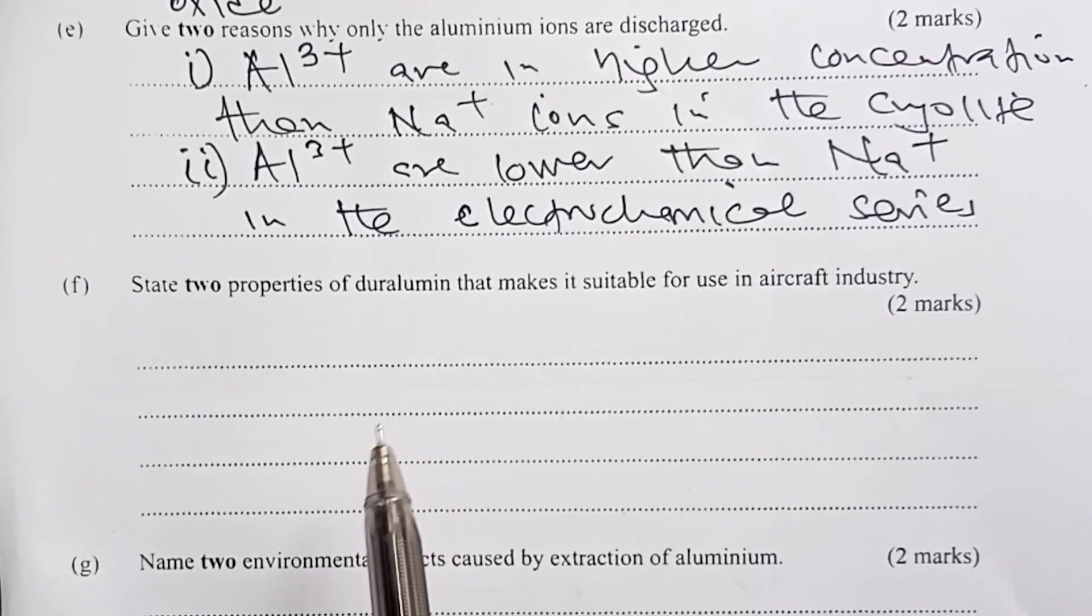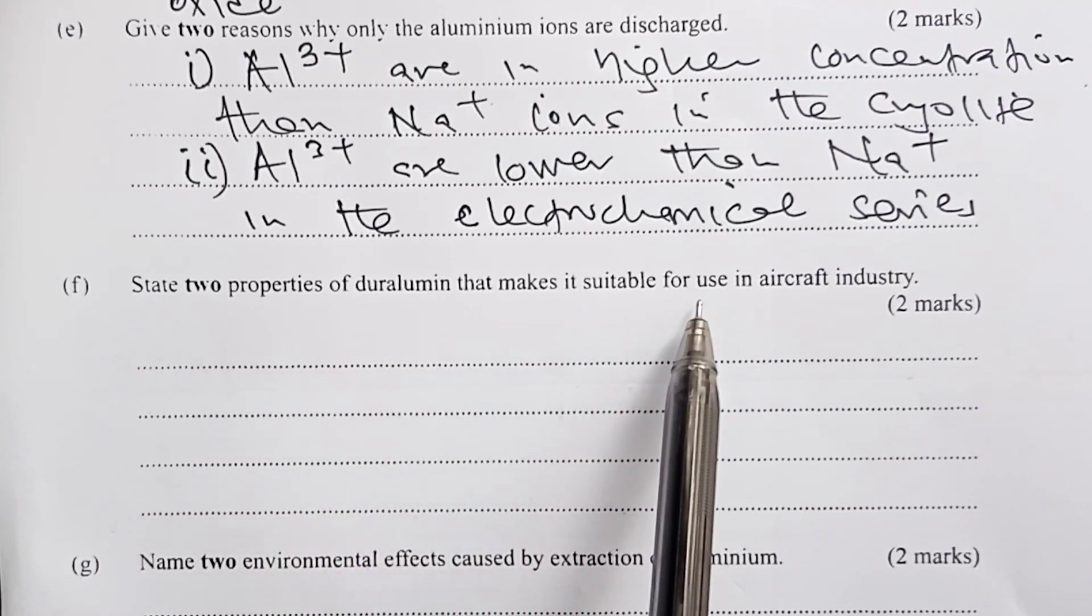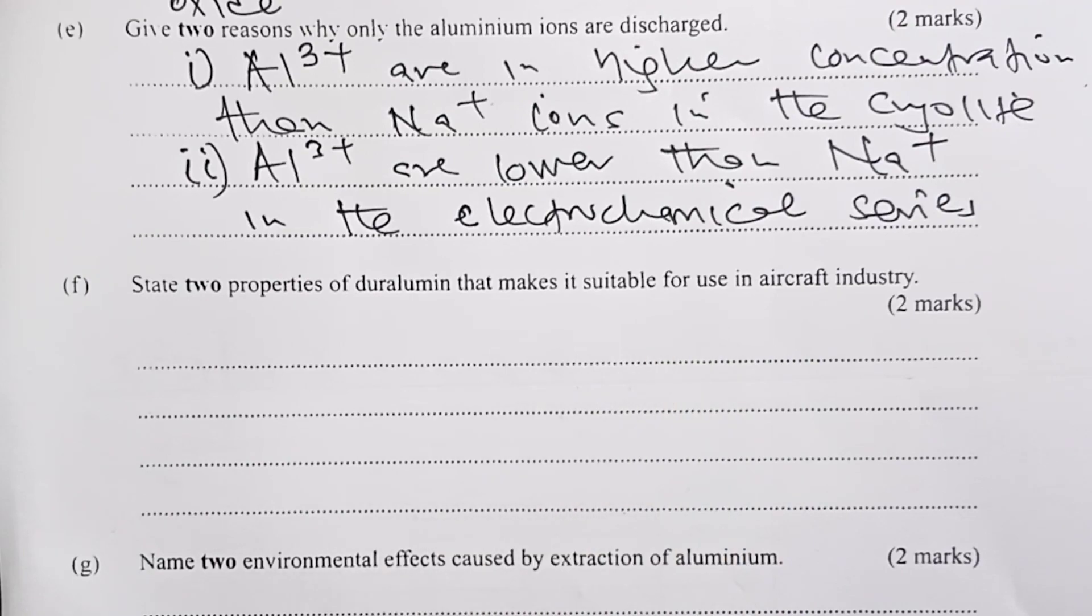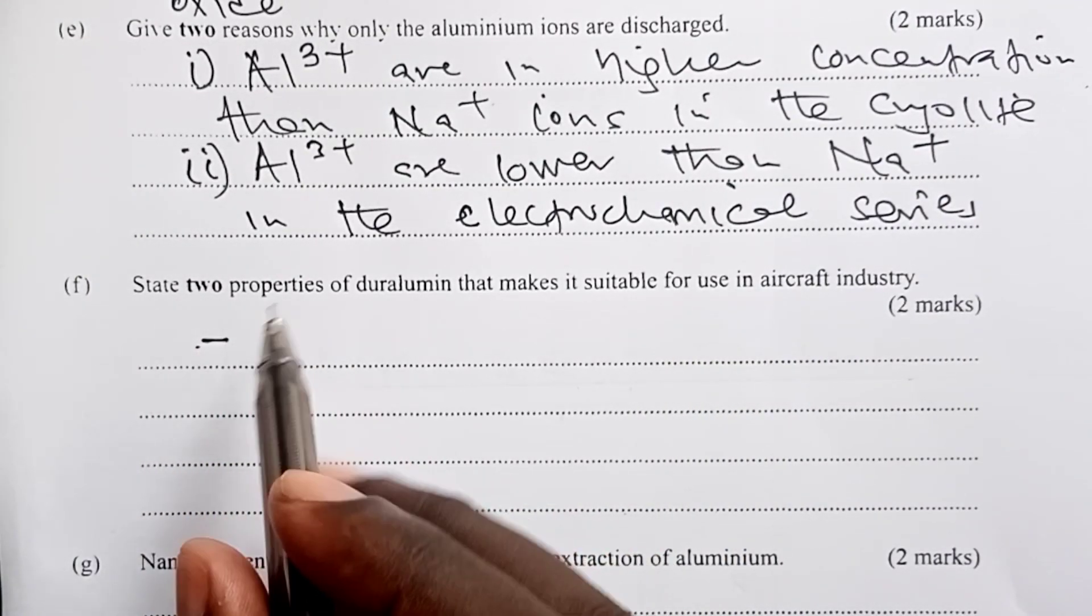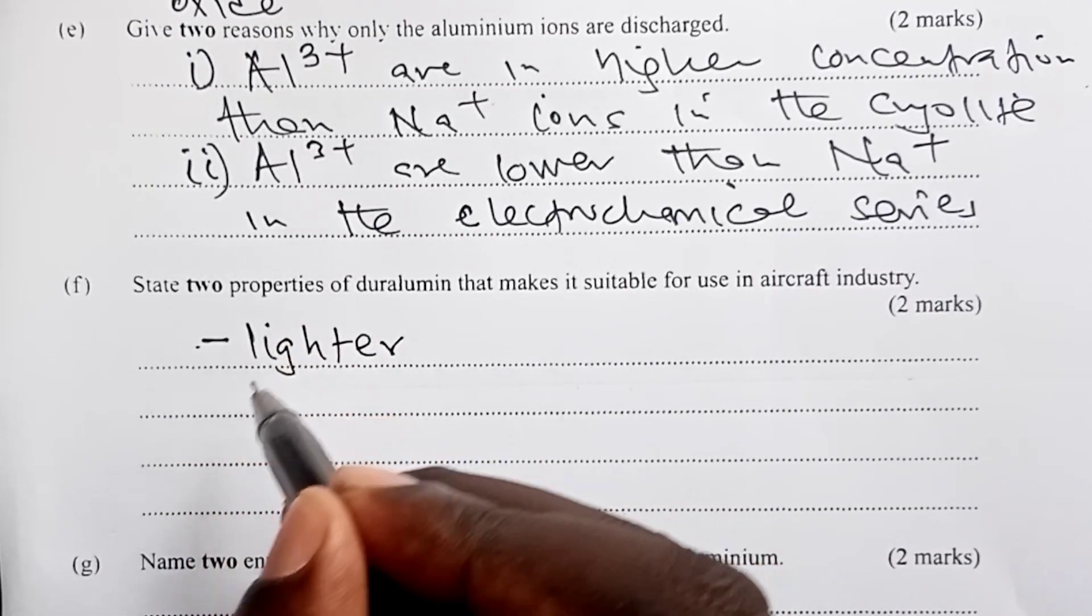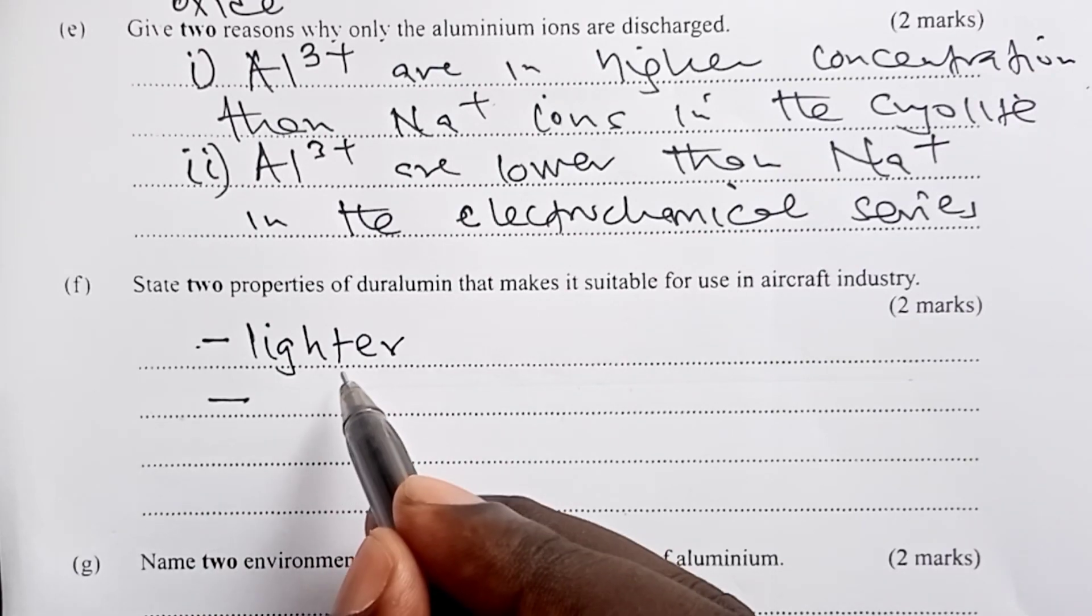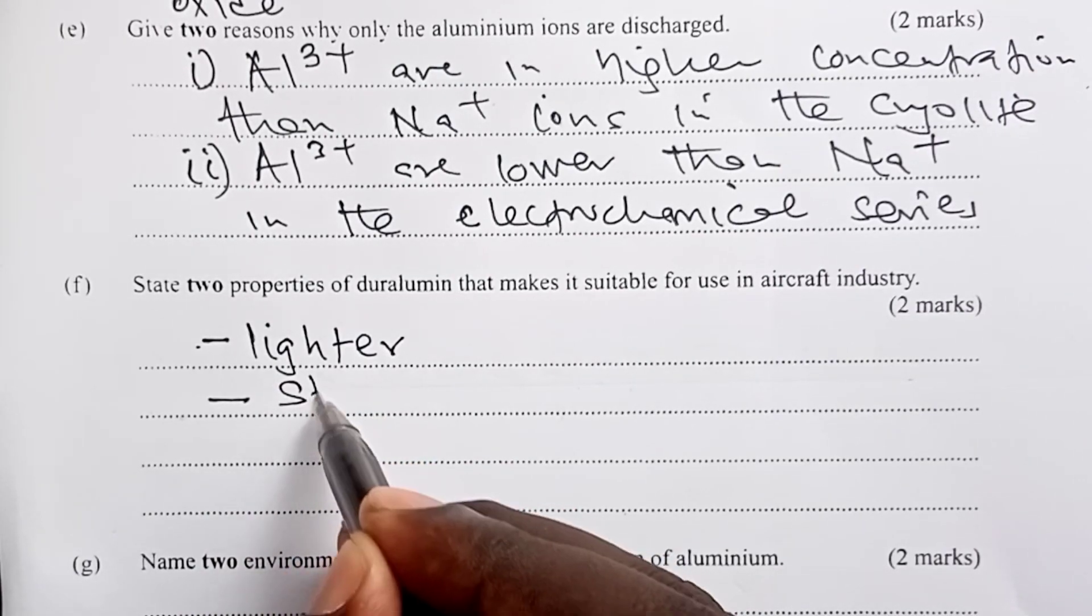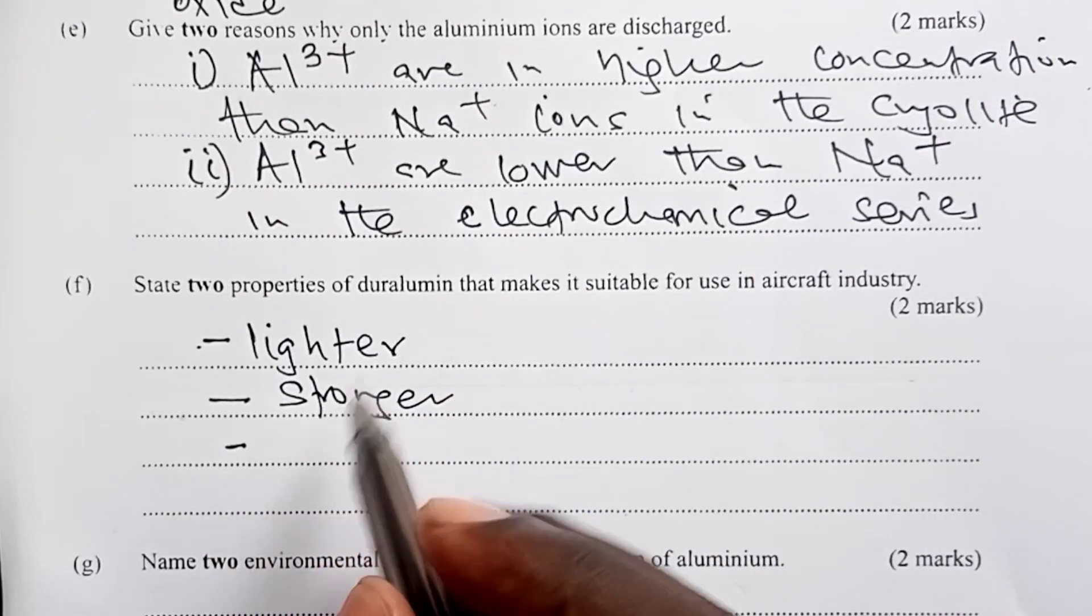To the next question, two properties of duralumine that make it suitable for use in aircraft industry. Here we have quite a number. Duralumine is lighter, duralumine is cheaper, and duralumine could also be tougher compared to pure aluminum.